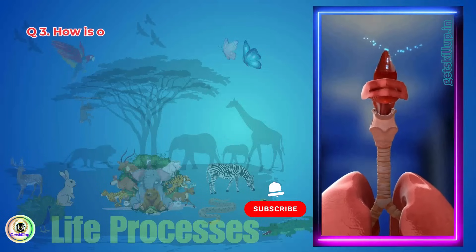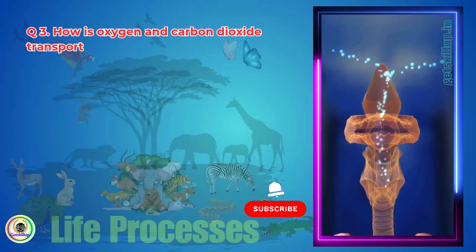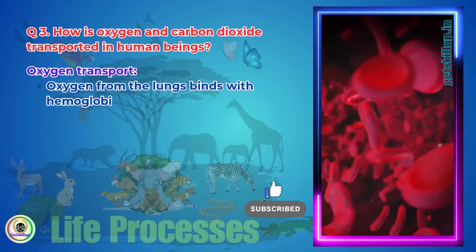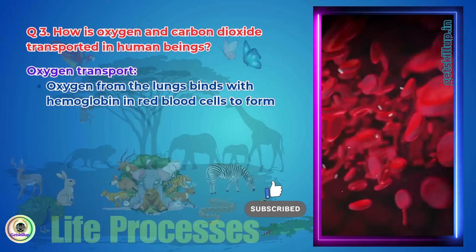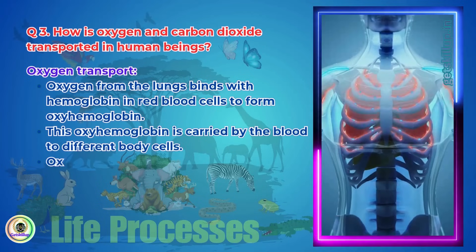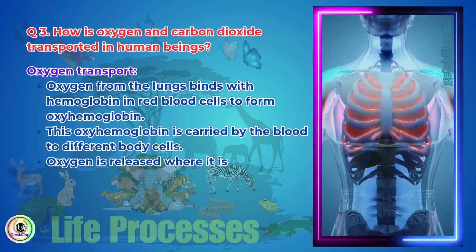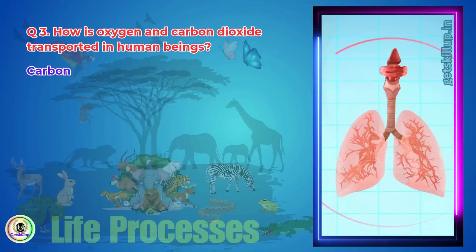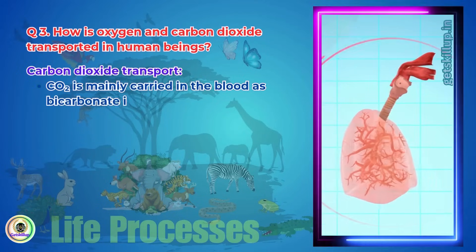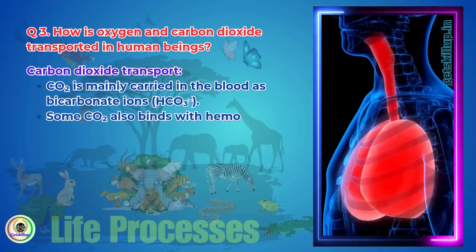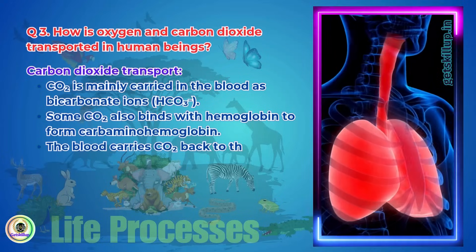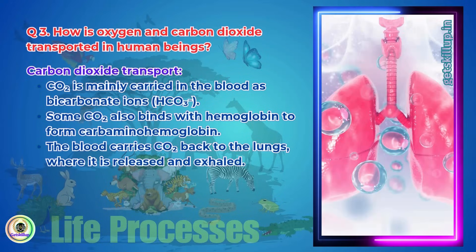Question 3: How is oxygen and carbon dioxide transported in human beings? Oxygen from the lungs binds with hemoglobin in red blood cells to form oxyhemoglobin, which is carried by the blood to different body cells, where oxygen is released for respiration. CO2 is mainly carried in the blood as bicarbonate ions (HCO3⁻). Some CO2 also binds with hemoglobin to form carbaminohemoglobin, and is carried back to the lungs where it is released and exhaled.